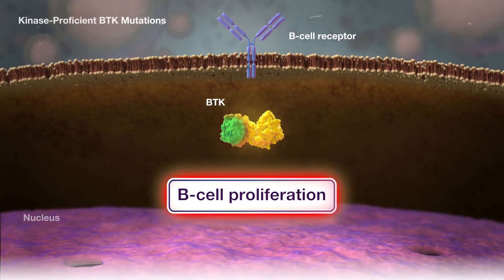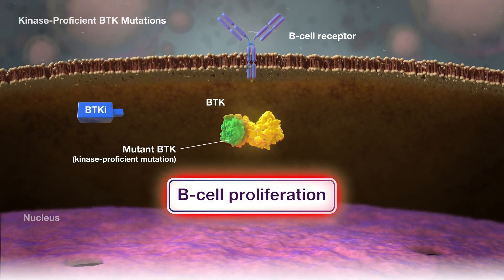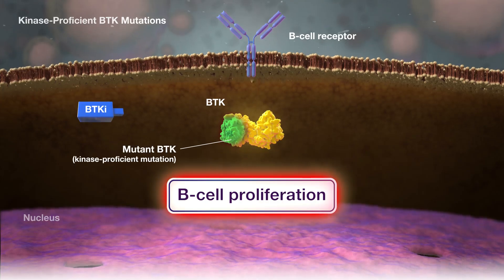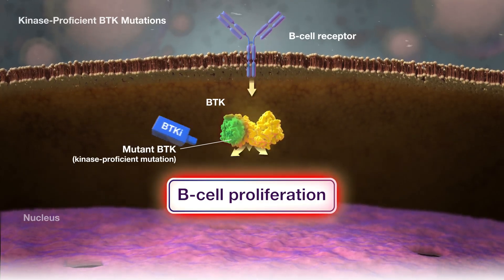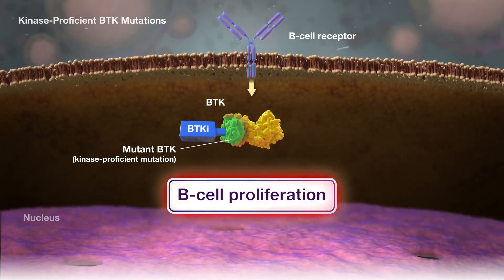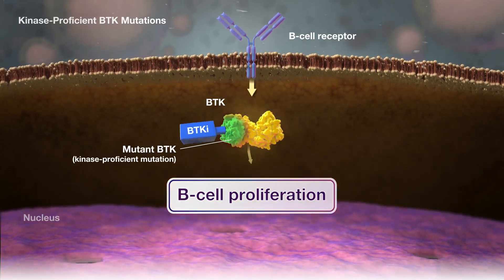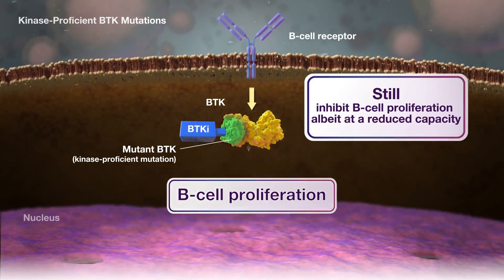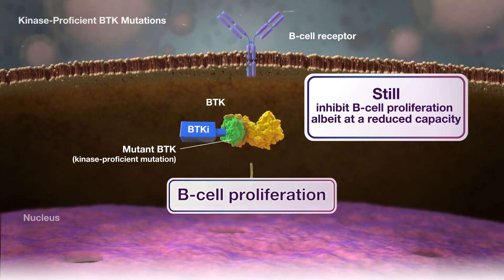Kinase-proficient mutations in the kinase domain of BTK occur due to amino acid alterations that are introduced. The amino acid change partially impairs the ability of BTKIs to bind to the BTK protein at their binding site. With a kinase-proficient mutation, the enzymatic activity of BTK can be normal or decreased compared with wild-type BTK. In this state, BTKIs can still inhibit B-cell proliferation, albeit at a reduced capacity due to reduced binding affinity of the BTKi to BTK.